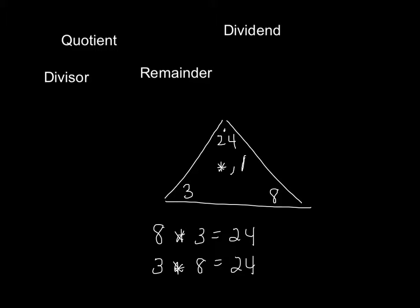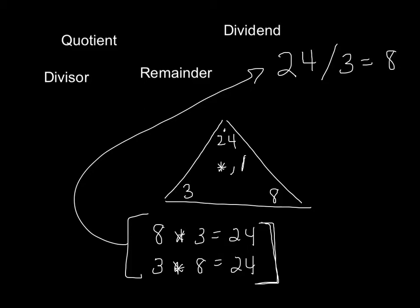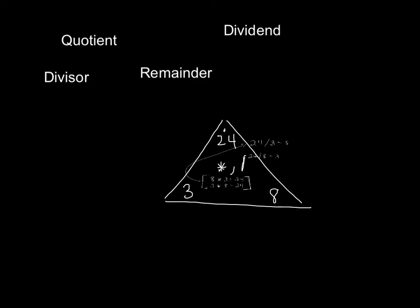Now we can also use these same exact facts and do division. Division is the opposite of multiplication. So let's just move these up here. And we always start with the largest number in division. So we do 24 divided by 3 equals 8. Or 24 divided by 8 equals 3. That means if we are thinking that we have 8 groups of 3, that would be 24 total. Or 3 groups of 8.